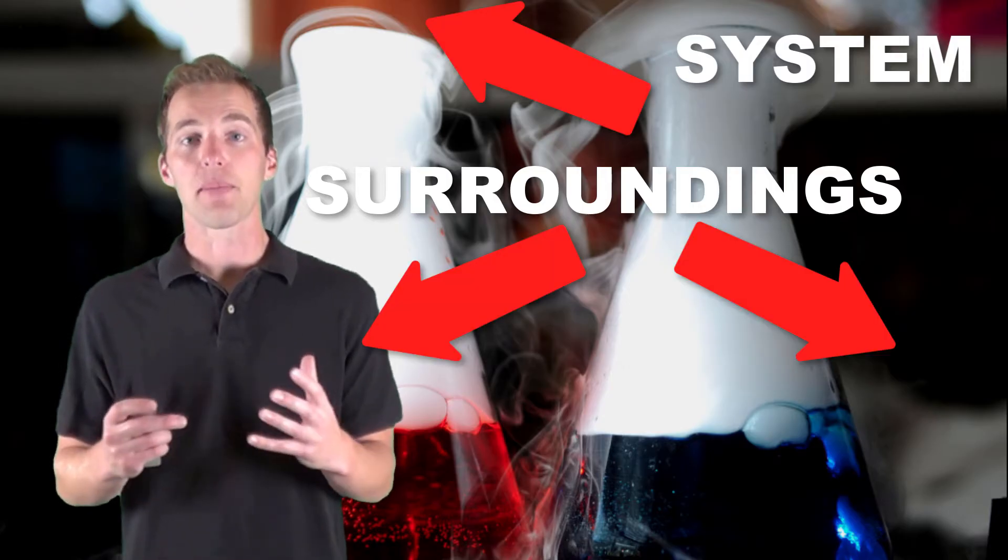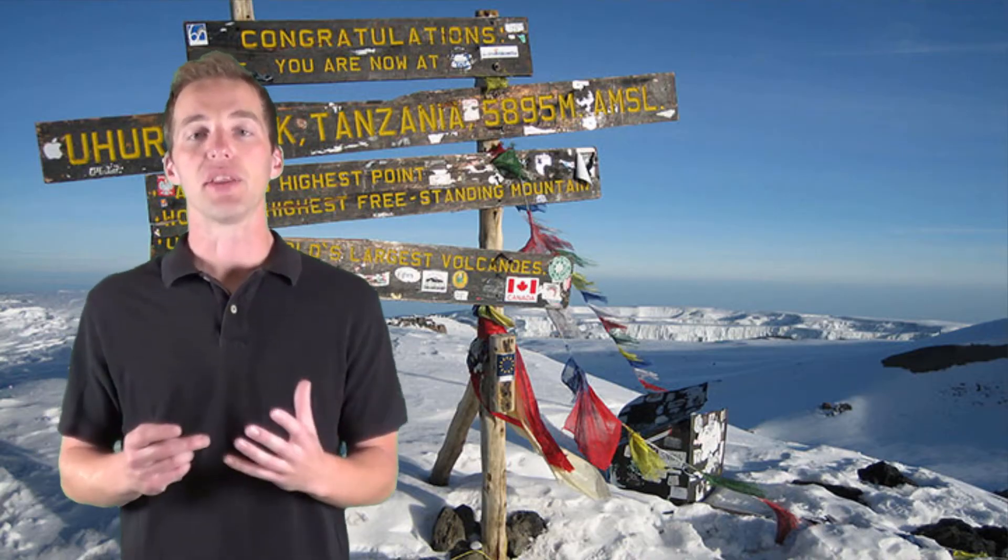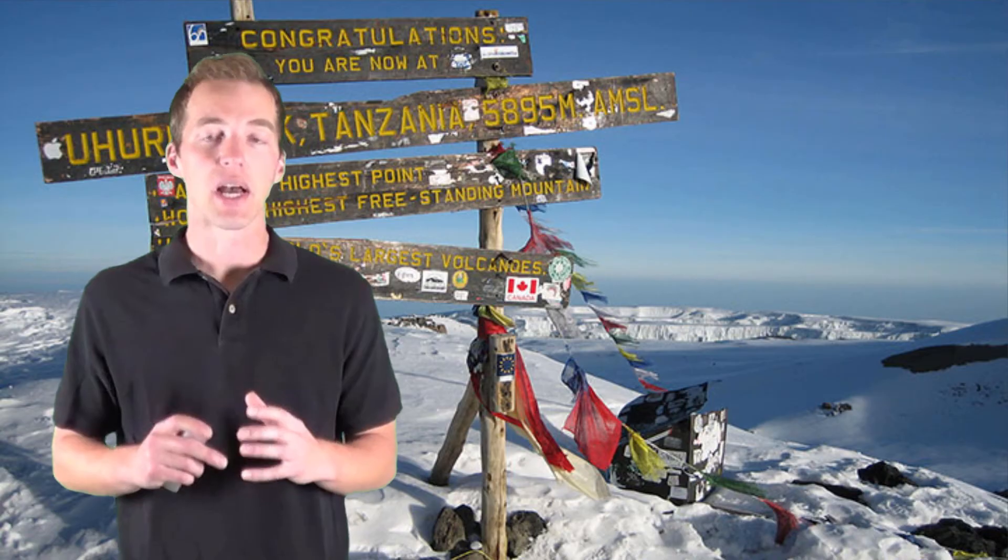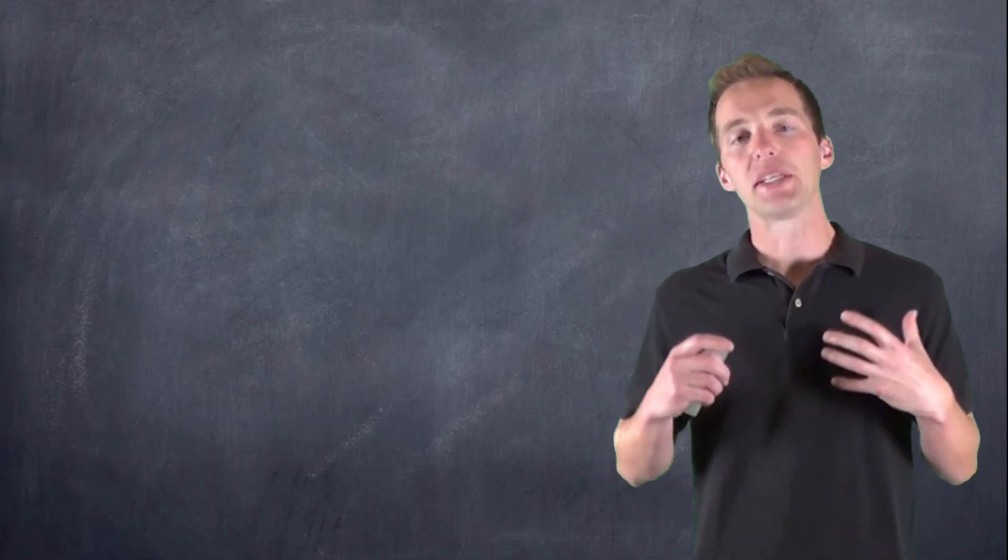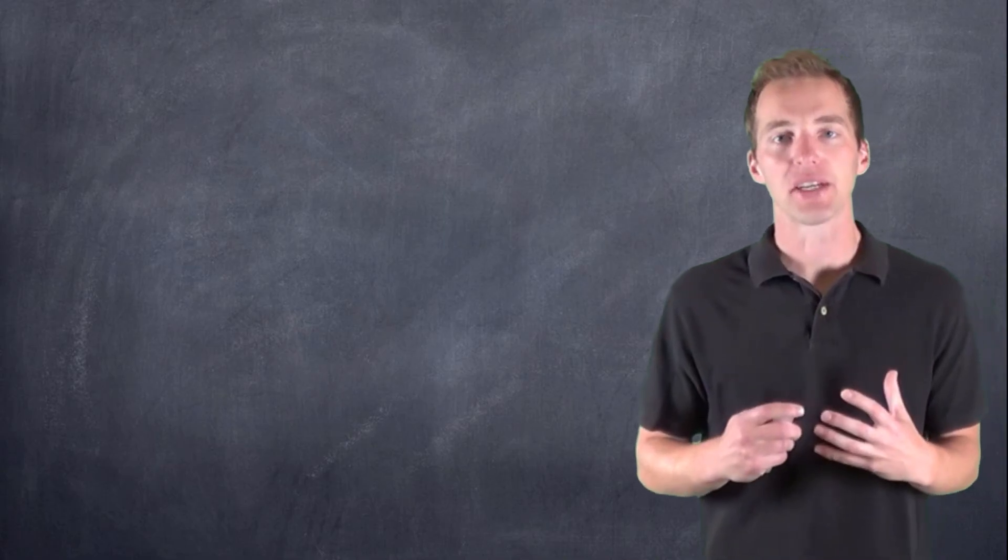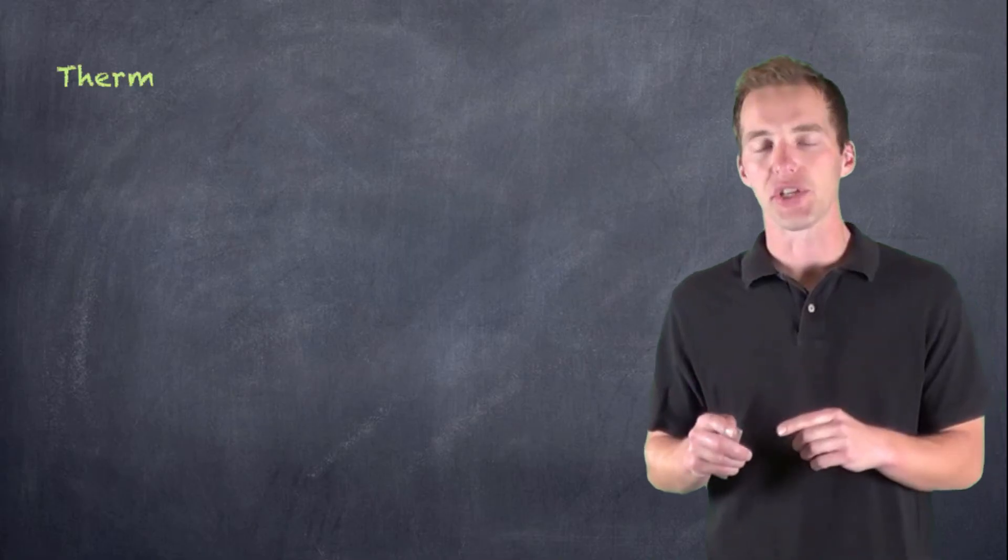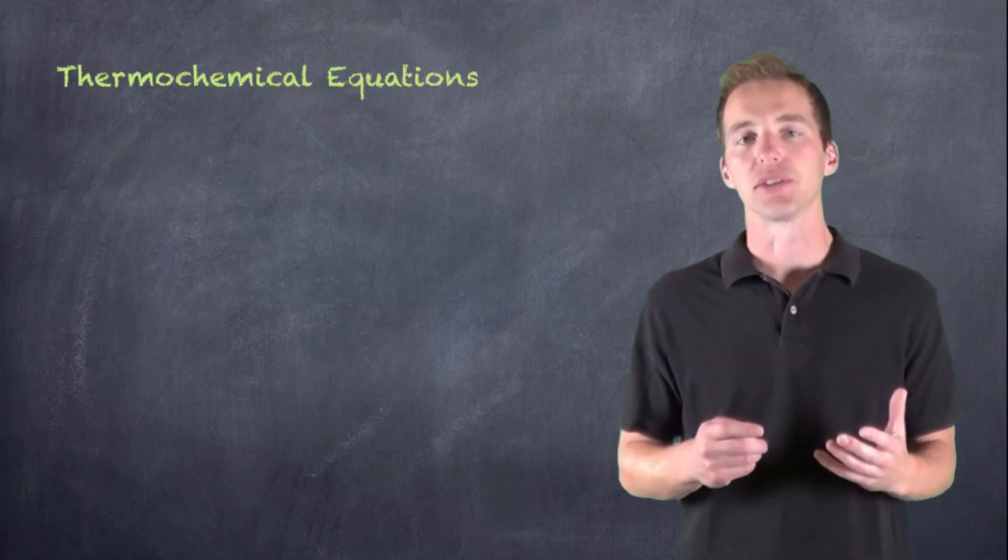And the surroundings are really everything else. So I could be on the top of Mount Kilimanjaro, and it could be affected by a chemical reaction theoretically anywhere. Now, that's not likely to be the case. Most of the time when we deal with the surroundings, we're dealing with the immediate surroundings. So when we represent these chemical reactions, we have to remember that just like a balanced chemical equation, we have to equate energy in here somewhere. And we refer to these as thermochemical reactions.